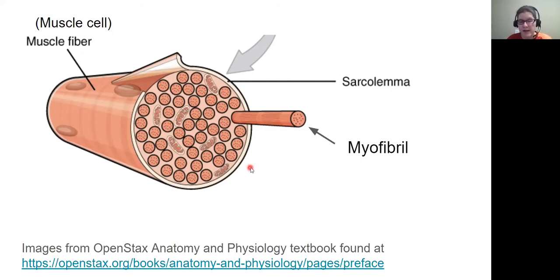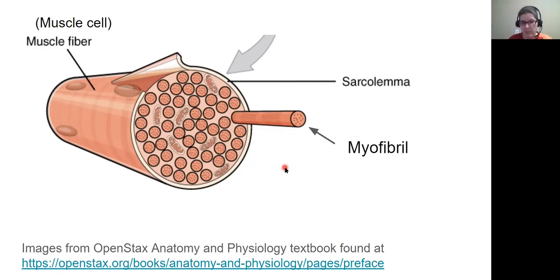In the Twizzler analogy, one whole pull-and-peel Twizzler acts like a muscle cell or muscle fiber, and each of the little pull-and-peel strands are the myofibrils. They're all the same, but they're stuck together to create one piece.